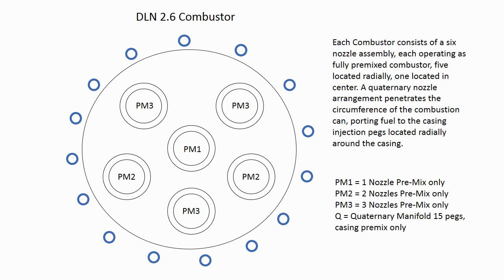PM1 consists of one nozzle which is premix only. PM2 consists of two nozzles which are premix only. PM3 consists of three nozzles which are premix only. The quaternary manifold contains 15 pegs, which are casing premix only.